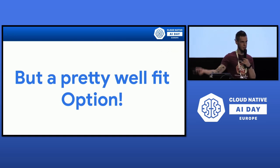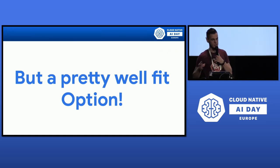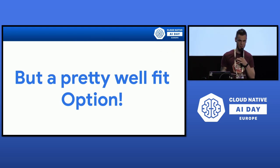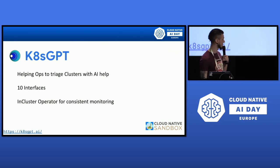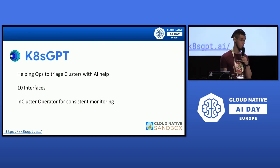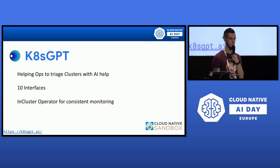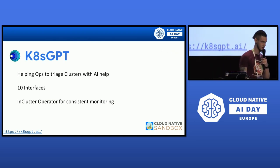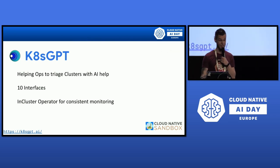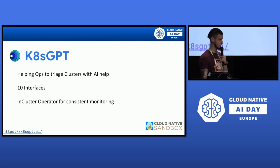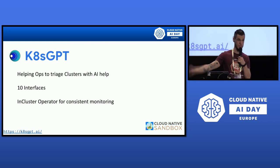Running AI workloads on Kubernetes gives us scalability, distribution, and we can also utilize AI to streamline our processes or fix clusters. For this, there's an open source tool — a CNCF sandbox project since last year — called k8sGPT. Who has used k8sGPT? Not so many people. k8sGPT is an open source project that helps you triage Kubernetes issues.